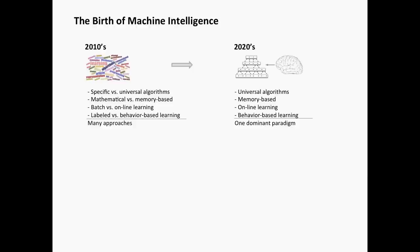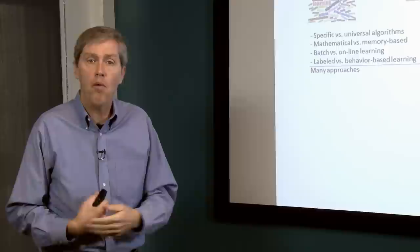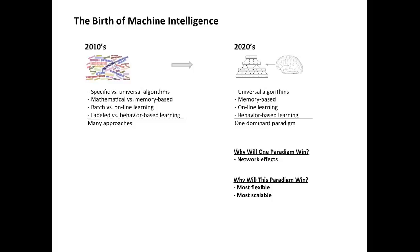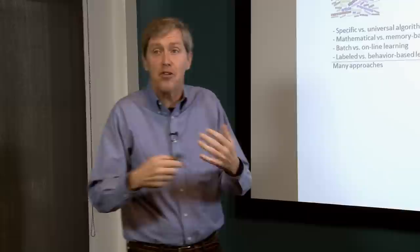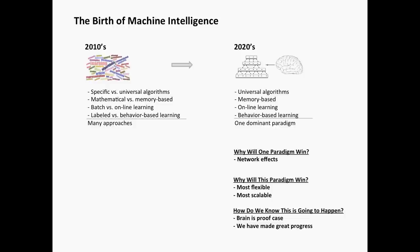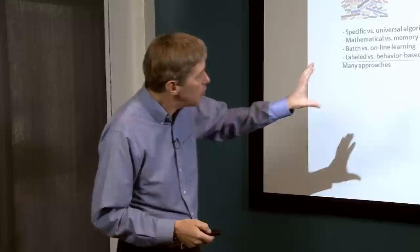The dominant paradigm will be a universal algorithm for machine intelligence — not specific for different problems, but universal. It's memory-based, online learning (meaning it learns continuously), and behavioral-based. Why will we settle on one paradigm? Network effects again. Why this particular paradigm? Same as before — it is the most flexible. We know brains can solve all kinds of problems with tremendous flexibility. It is scalable — we know from nature you can build small and large brains. We have a proof case in biology: the brain, the neocortex.